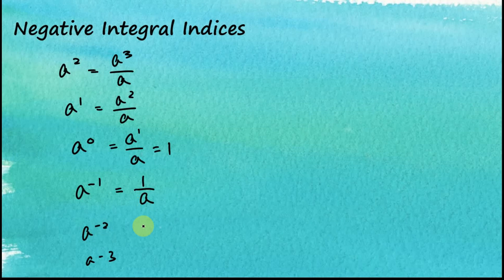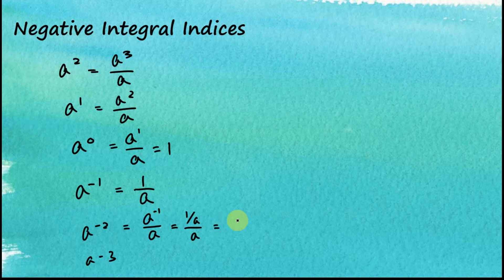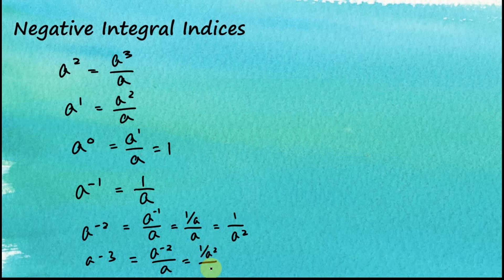How about a to the power of negative 2? This is equal to a to the power of negative 1 divided by a. We know that a to the power of negative 1 is 1 over a, so it's 1 over a divided by a, and this is equal to 1 over a squared. And a to the power of negative 3 is equal to a to the power of negative 2 divided by a, which equals 1 over a cubed.